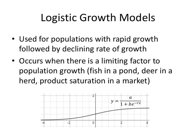Logistic growth models are used for populations with rapid growth followed by declining rate of growth. Say you've got a limiting factor to your population growth. You've got a pond that can only hold so many fish before they all start to die out. You might talk about deer in a herd, product saturation in a market. There might be all types of different scenarios where you'd want to have a logistic growth model.